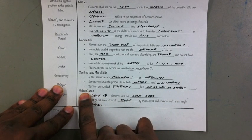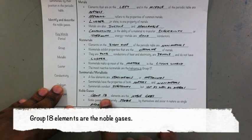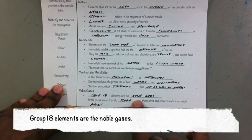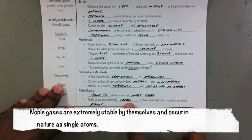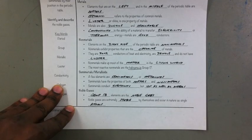The noble gases. Group 18 elements are the noble gases. Noble gases are extremely stable by themselves and occur in nature as single atoms.